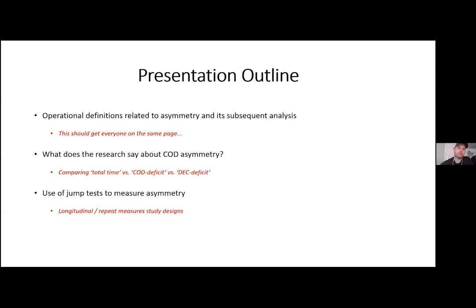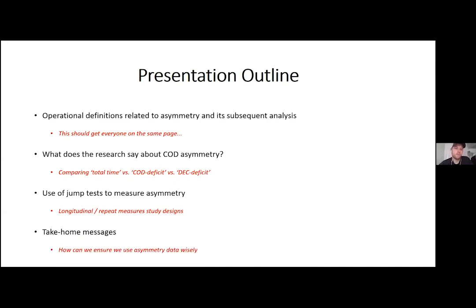We'll then move on to the use of jump tests to measure asymmetry, before looking at the importance of longitudinal and repeated measures study designs. The reason we don't look at that as much for change of direction speed is because there haven't been as many repeated measures studies examining COD asymmetry. We'll round it up with a few take-home messages on how we can use asymmetry data wisely.